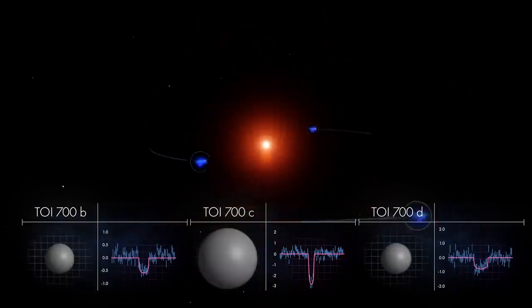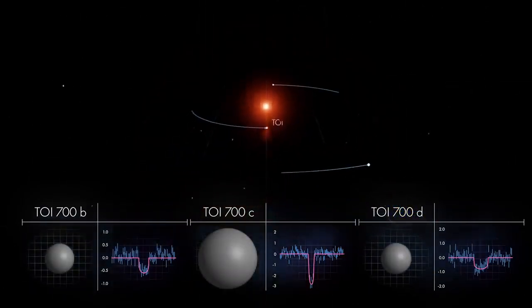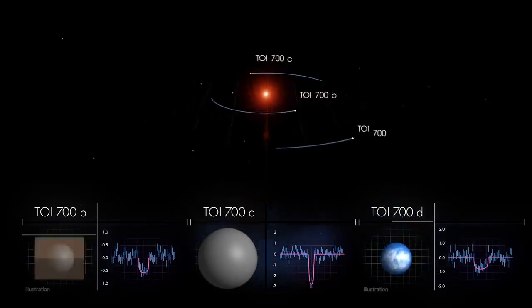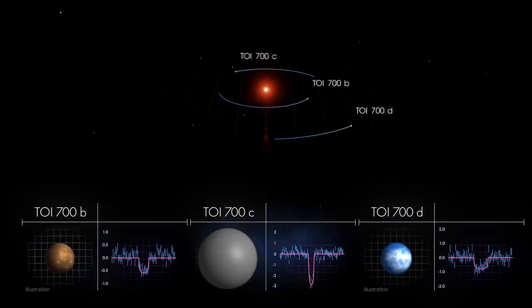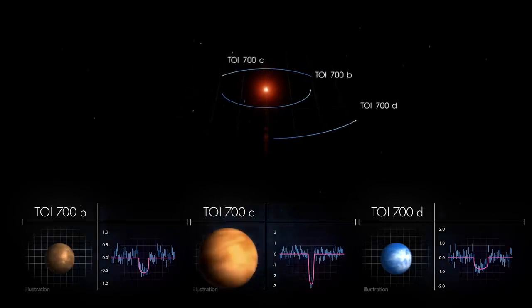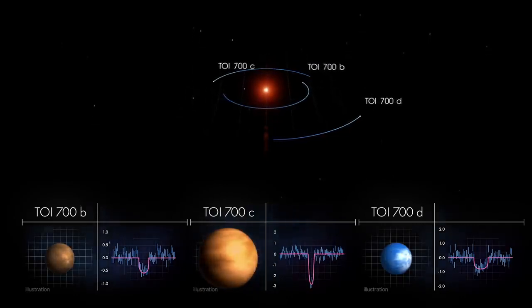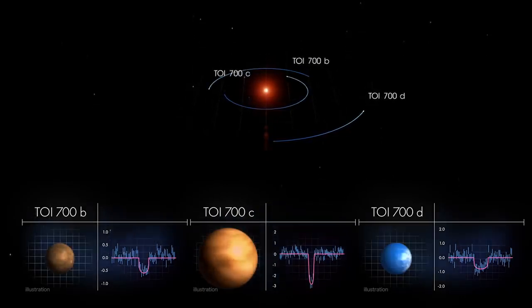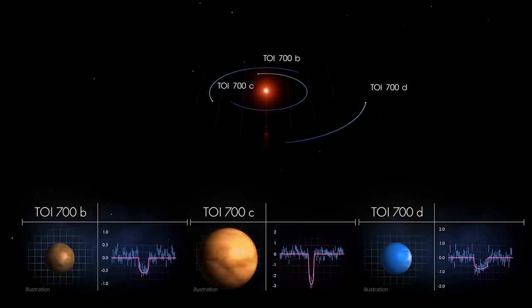Scientists determined that the inner and outer planets are almost Earth-sized and may be rocky. The middle world is more than twice as large and most likely made of gas. All three may be tidally locked, rotating just once each orbit, so the same side always faces the star.